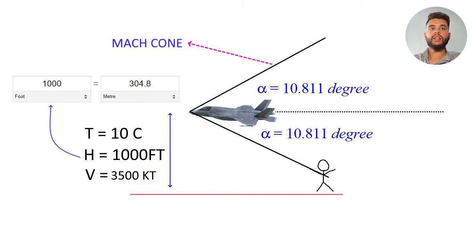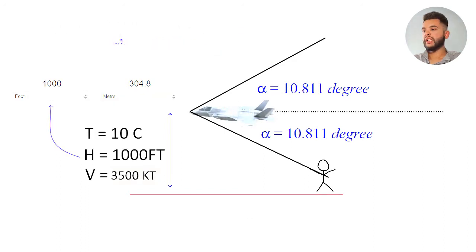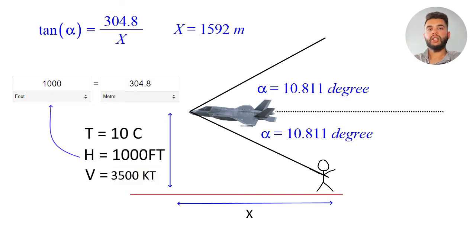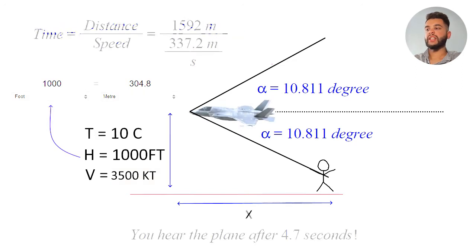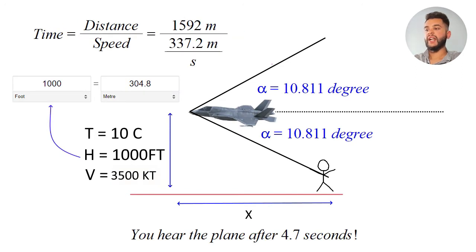Now alpha is the Mach angle. Every Mach number will have an angle at some point and then it will produce a sonic boom at that angle. Next you have the angle and you have the height of a thousand feet which we can convert to meters. Then we can use tan of alpha equals that value over x where x is the distance and then you can solve for that. When you have the distance you have the time.